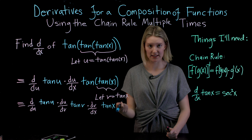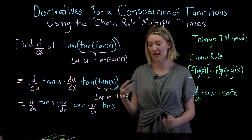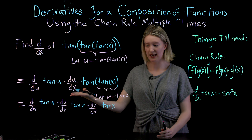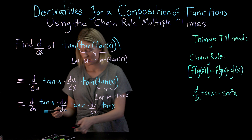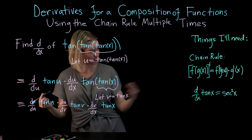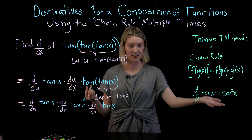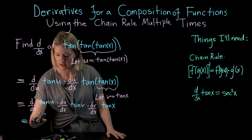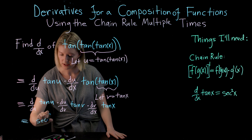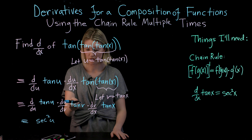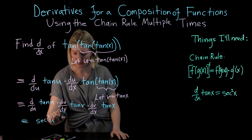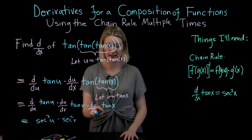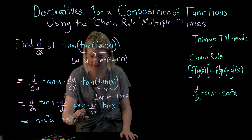At this point I ask myself: is this a function I know how to take the derivative of? And the answer is yes — this is the basic trig function. So I don't have to use the chain rule anymore. Using what we know: the derivative with respect to u of tangent of u is secant squared u; the derivative with respect to v of tangent of v is secant squared v; and the derivative of tangent of x with respect to x is secant squared x.